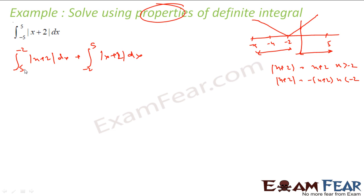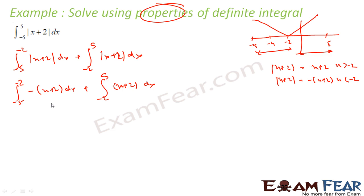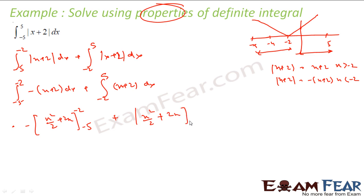Since we are integrating from -5 to -2, the value of |x+2| is -(x+2), so the first part becomes the integral of -(x+2) dx from -5 to -2. The second part from -2 to 5 has |x+2| = (x+2), so it becomes the integral of (x+2) dx from -2 to 5. Now both integrals are continuous, so we can solve them.